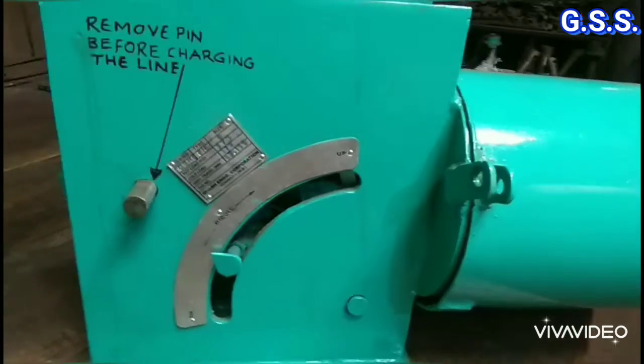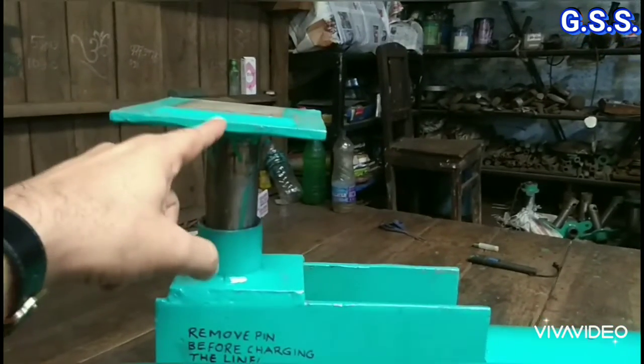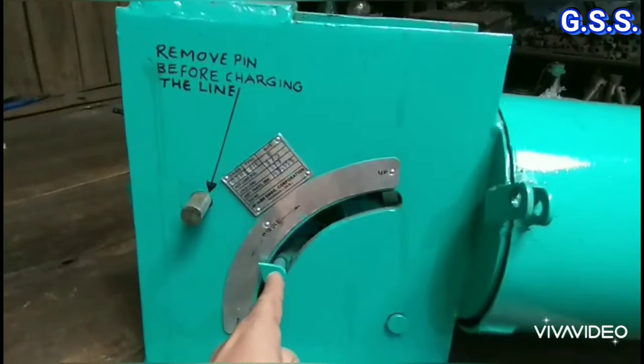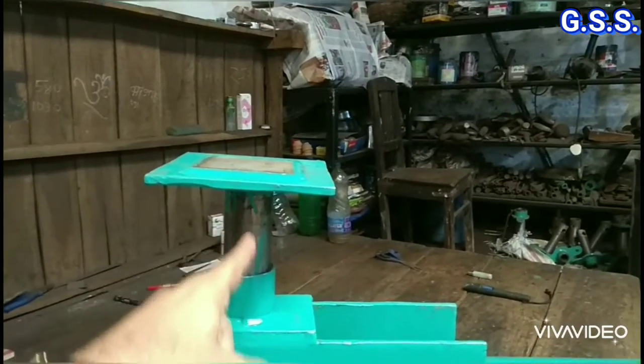The travel scale knob indicates the actual vertical movement of the pipeline. When the pipeline is raised up, the travel scale knob goes to the right side upward, and when the pipeline comes down, the travel scale knob comes down.